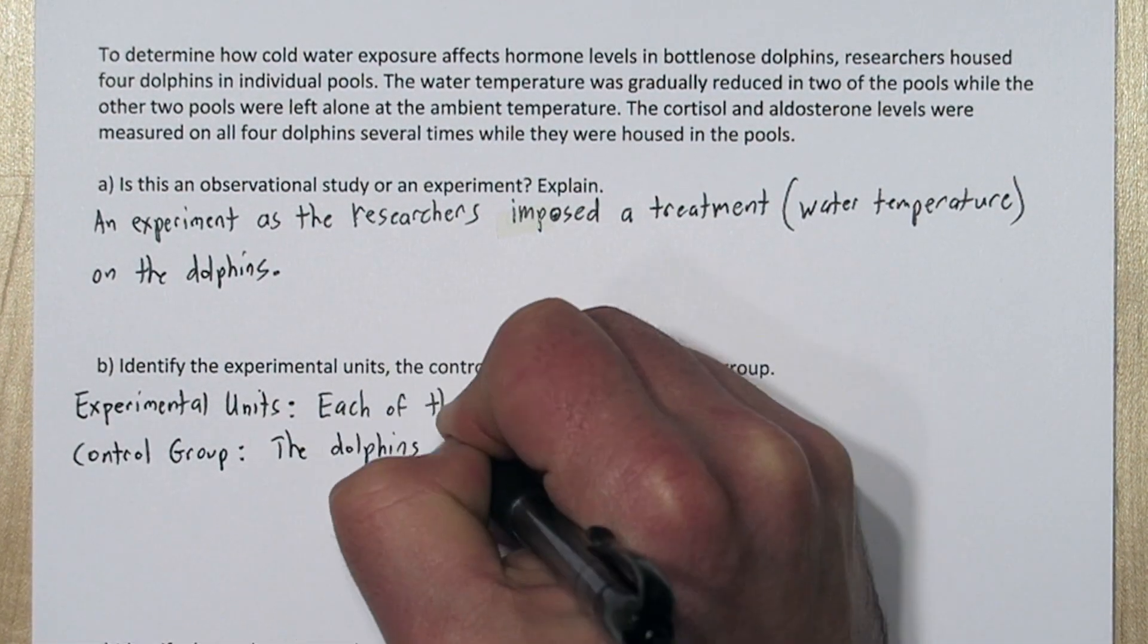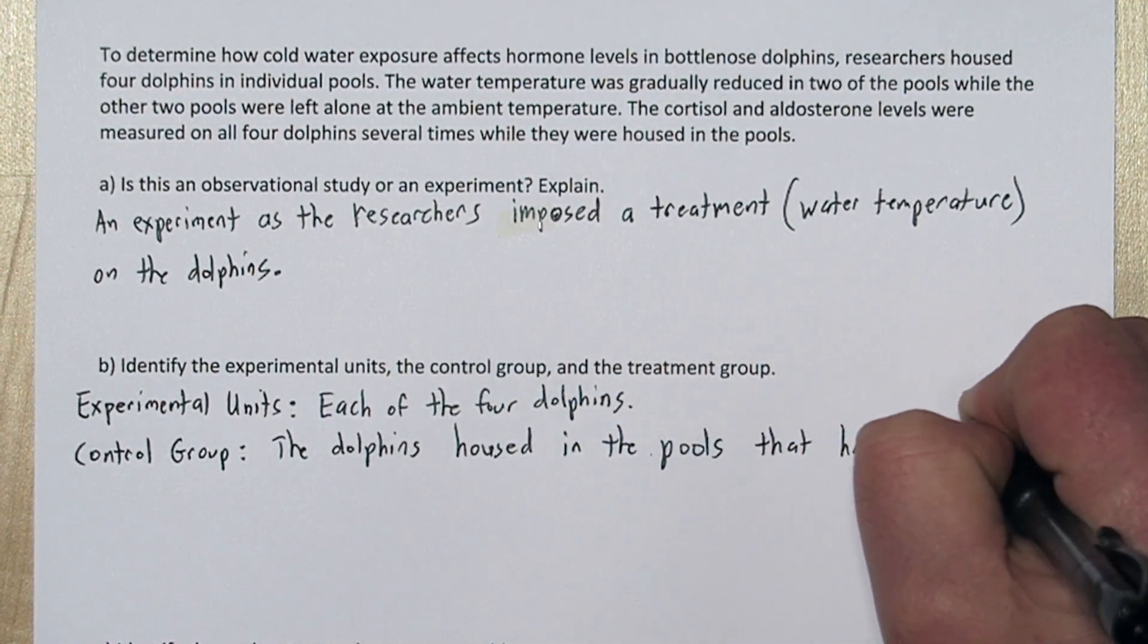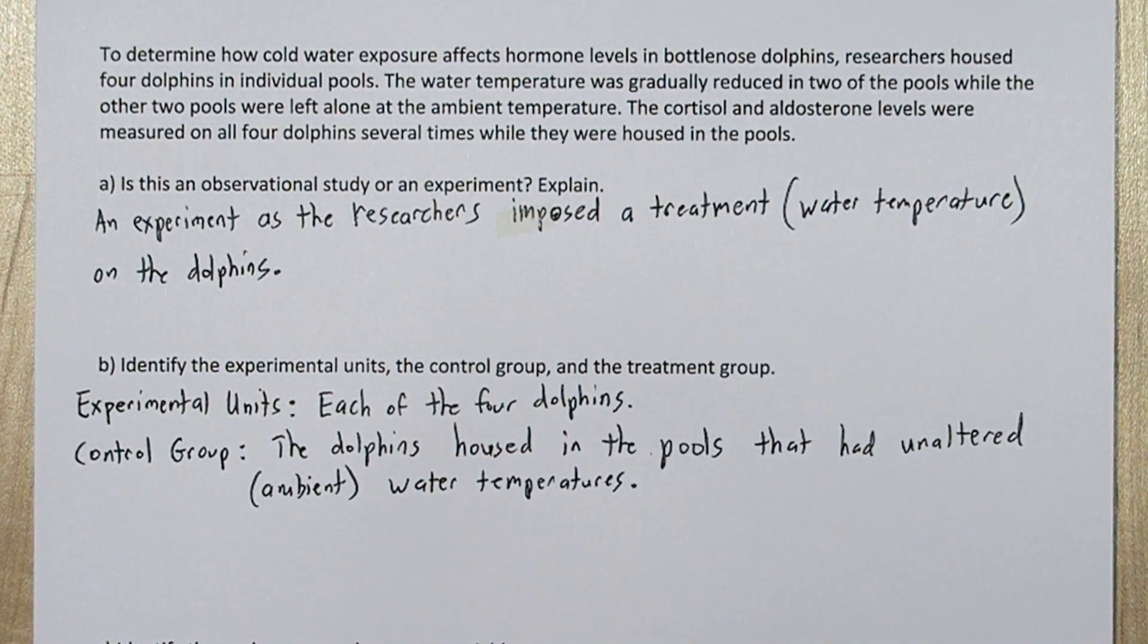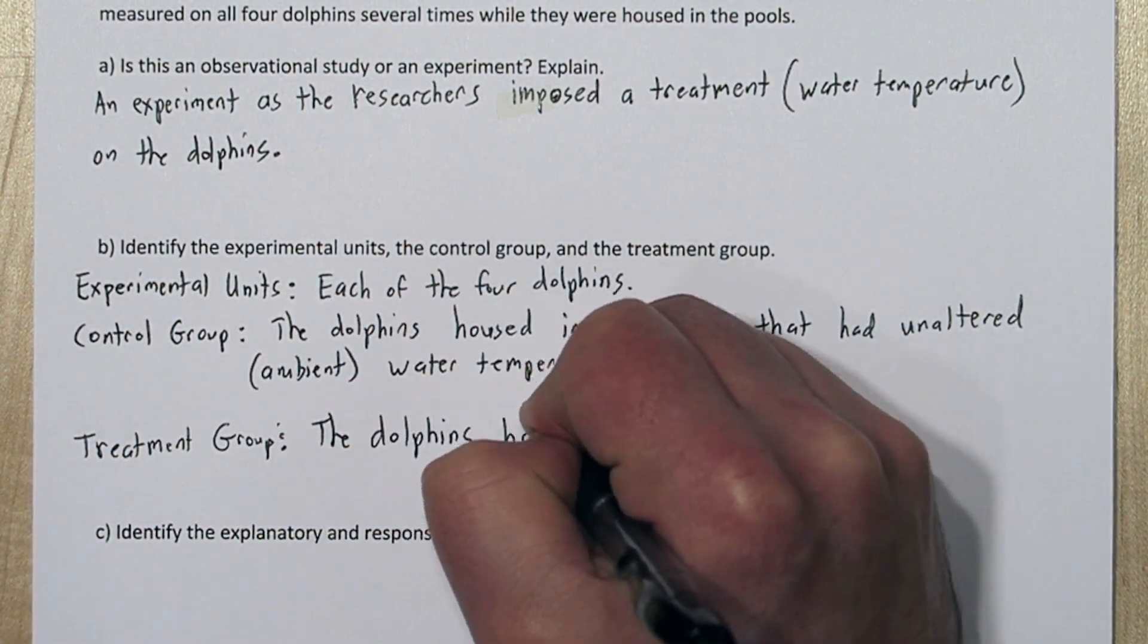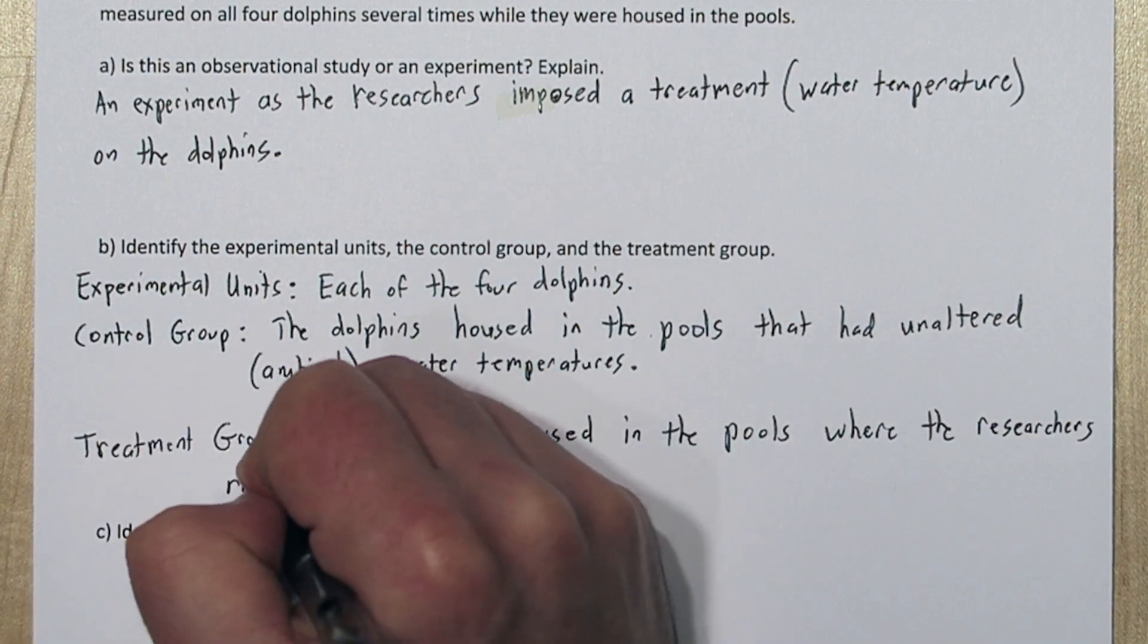The control group is the dolphins that were housed in the pools that had the unaltered ambient water temperatures. The treatment group is the dolphins that were housed in the pools where the researchers reduced the water temperatures.